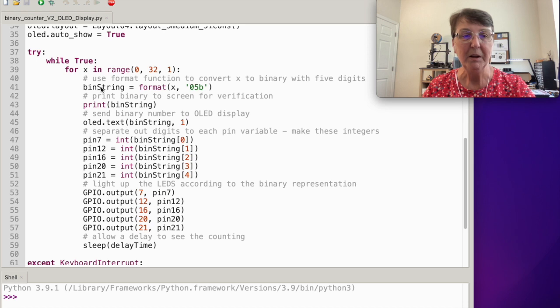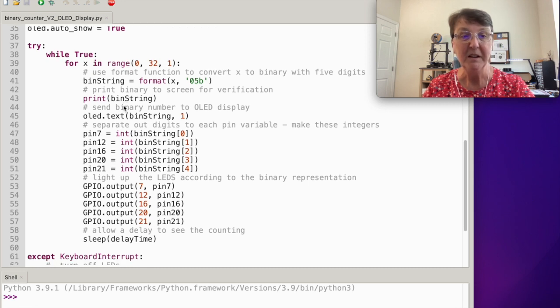Then here in the while true loop I do a for loop and go through the numbers of zero to 31 by ones. To get the binary number I want as I'm counting, I'm just using a format function that will return a five digit binary number back to me. I print that to the screen, I also send it to the OLED display, and then I pull off the parts of the string, so the string is just zeros and ones, I pull that string apart into its individual digits and assign it to each of those LED pins and then that will light up the LED pins.